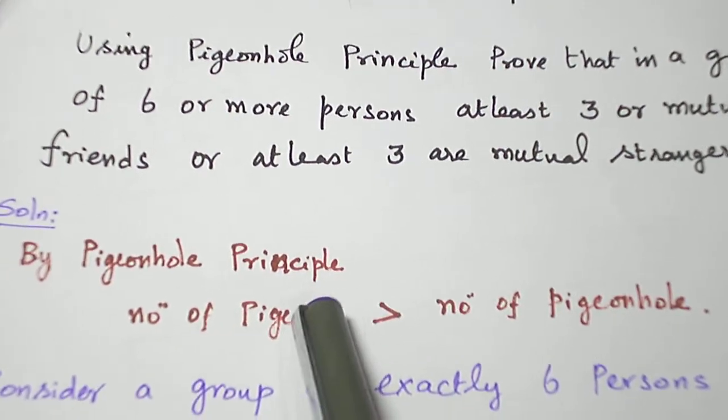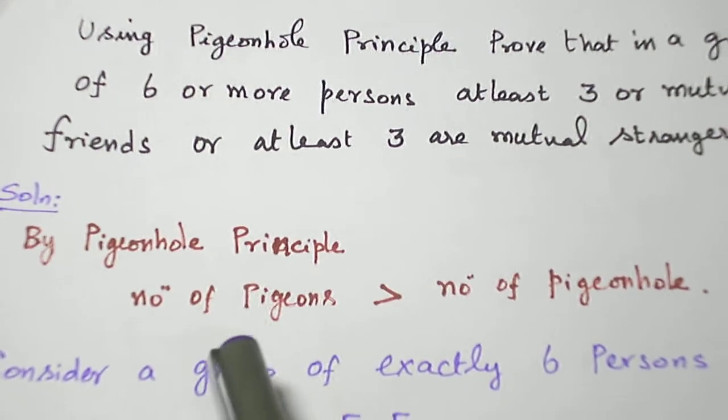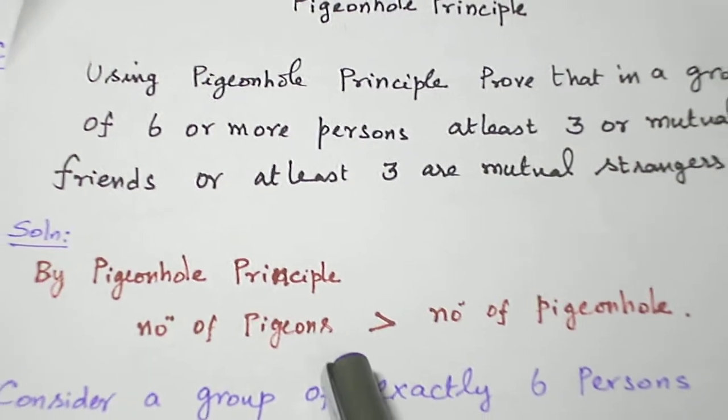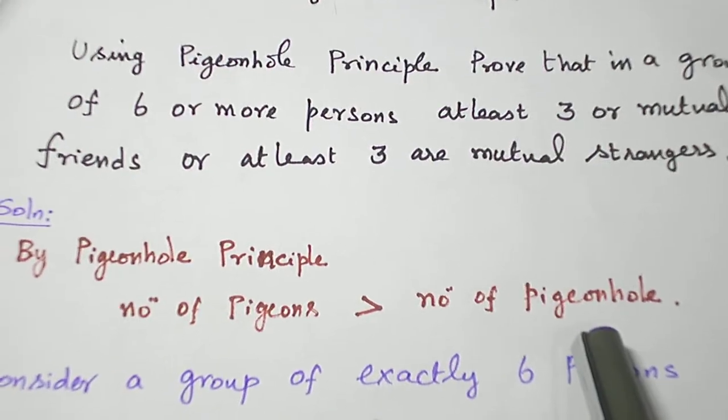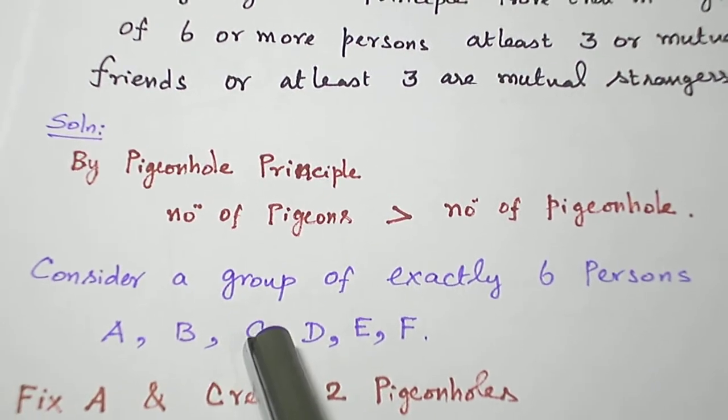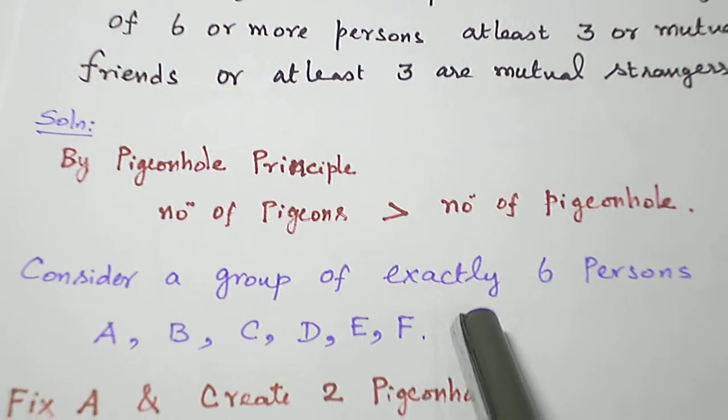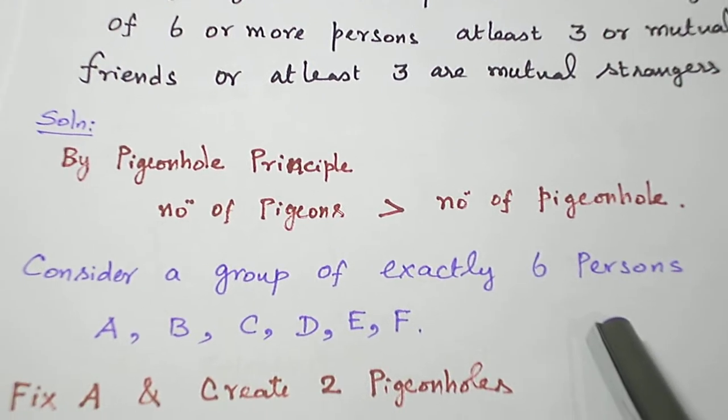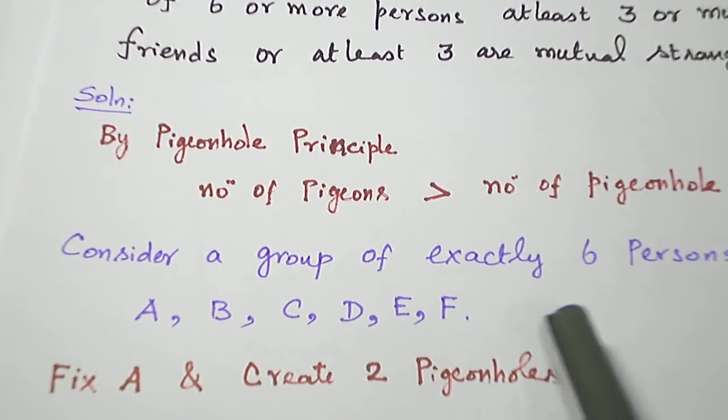Basically, to apply Pigeonhole Principle, number of pigeons should be greater than number of pigeonholes. So I take the problem in this way: a group of exactly 6 persons are taken, A, B, C, D, E, F.